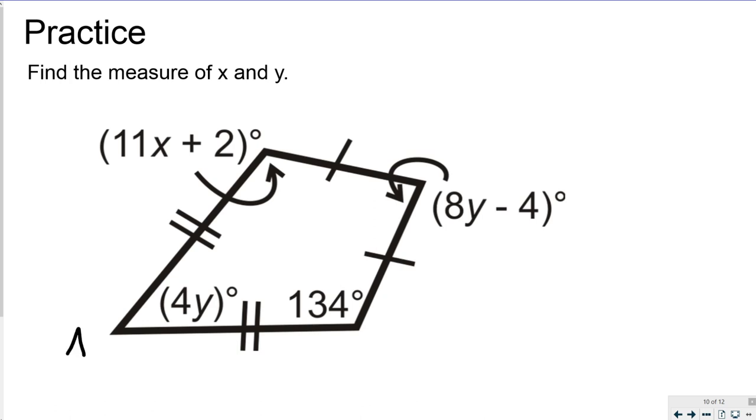I know, so if I start dropping some labels on here, A, B, C, and D. I know that B and D are congruent, so B has to be equal to D.